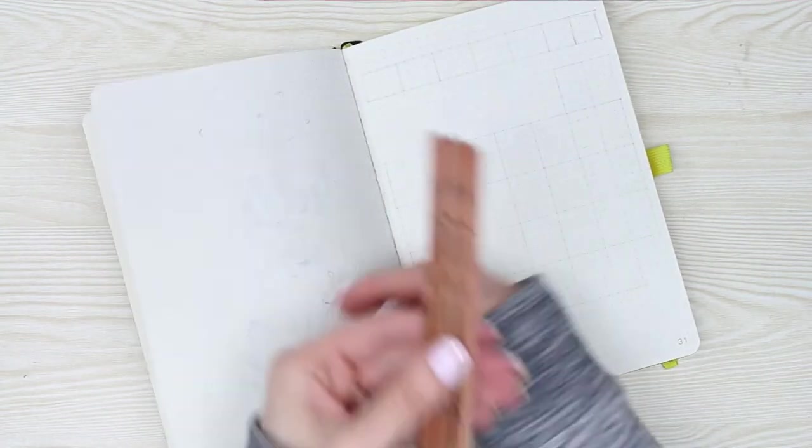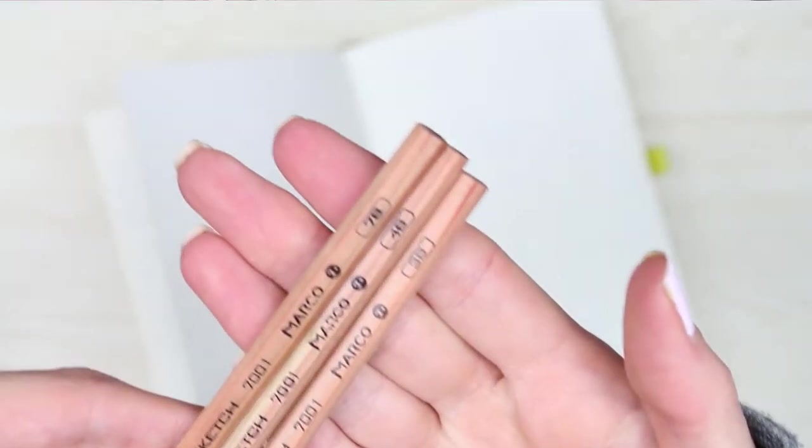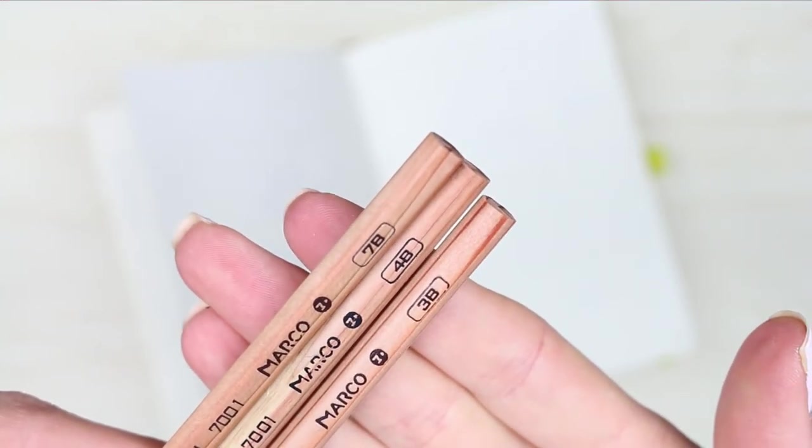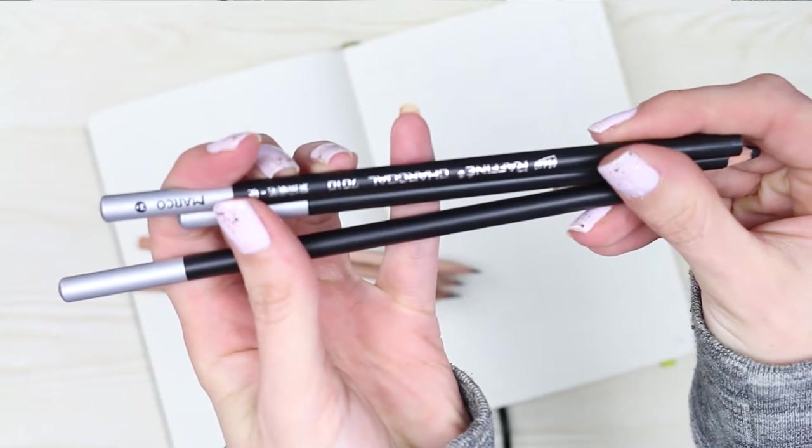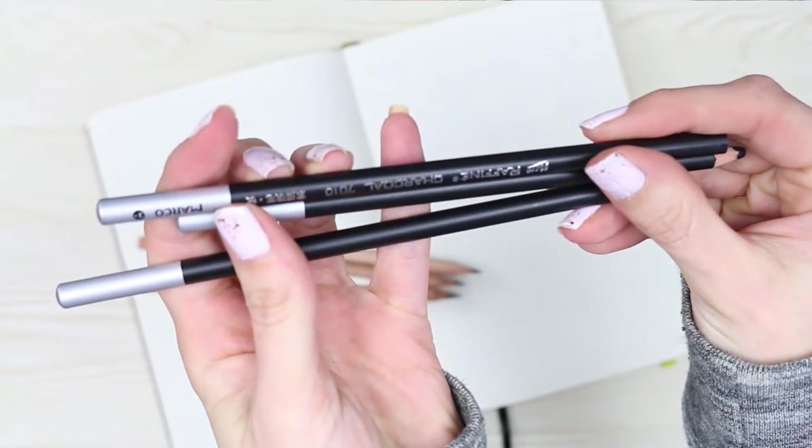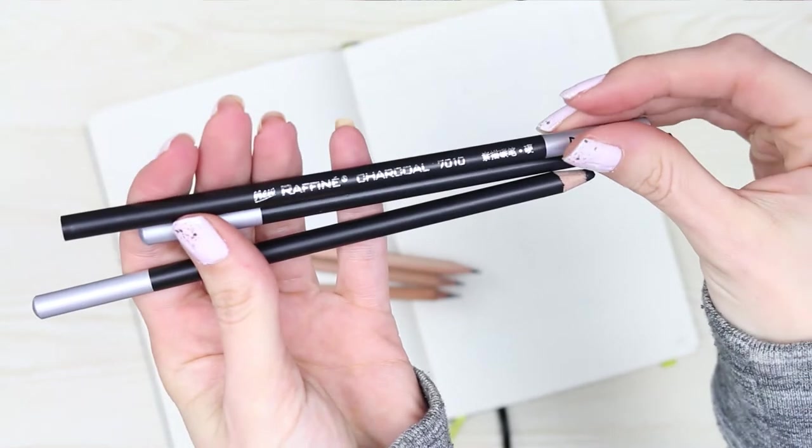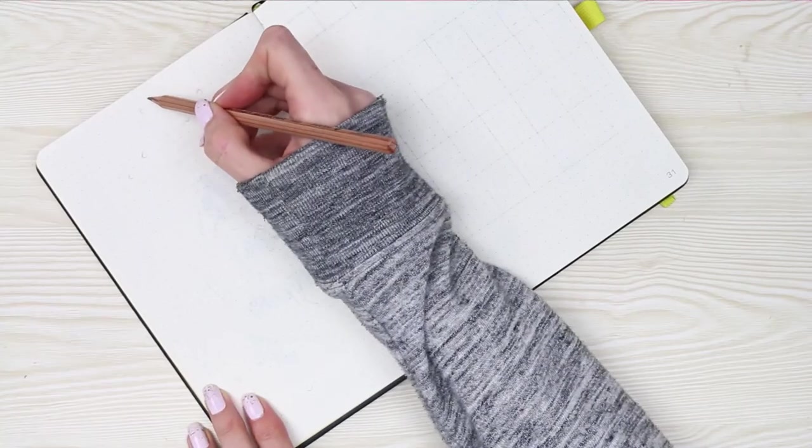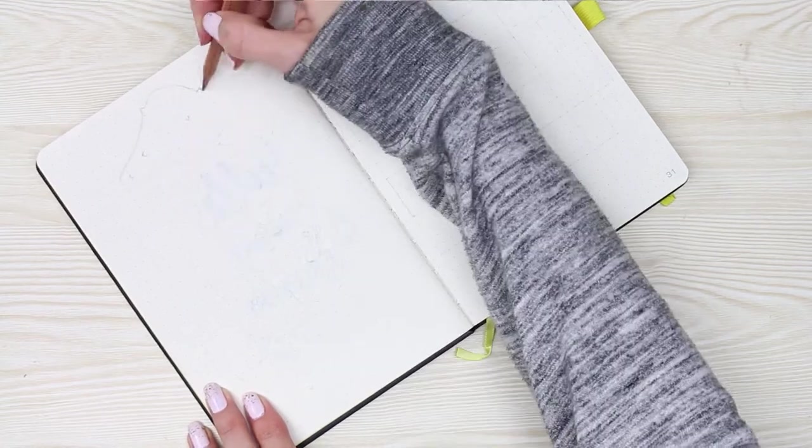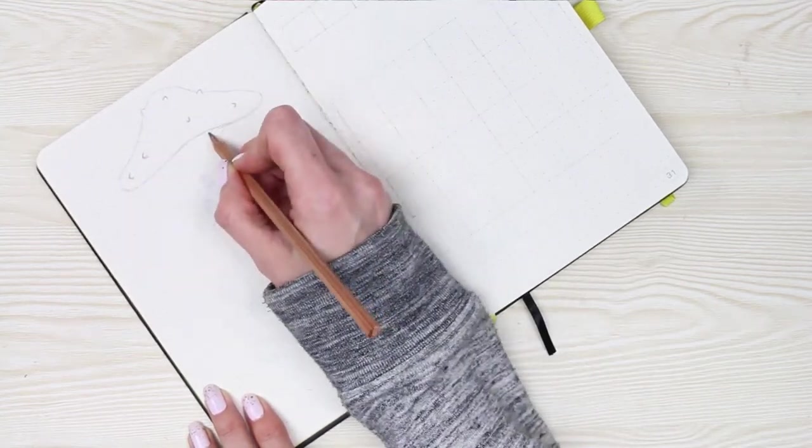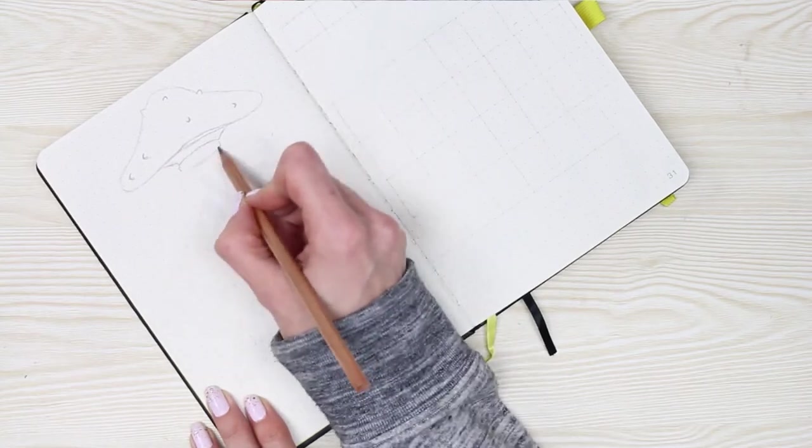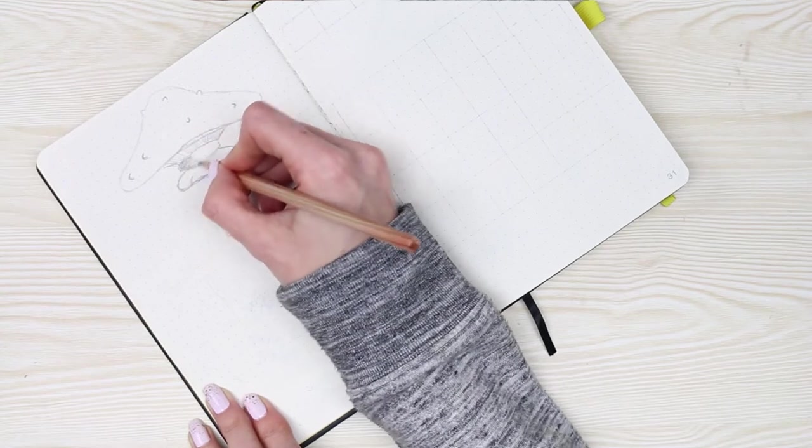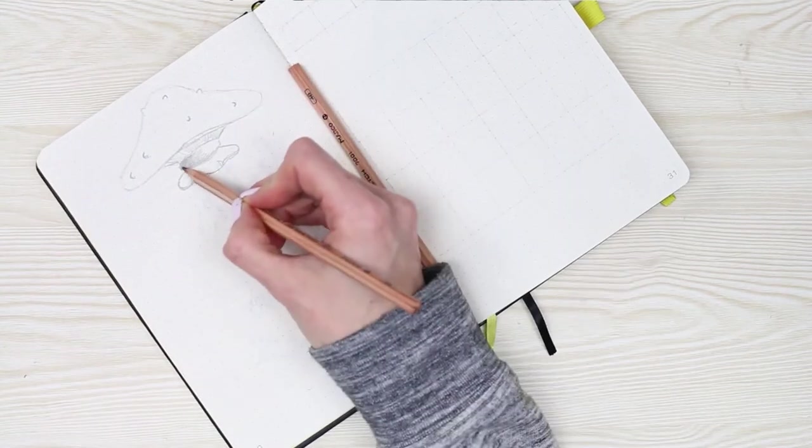For February I've actually decided to sketch in my bullet journal. I've never really sketched in my bullet journal before, just drawn. I'm going to be using a couple of different strengths of pencil. I did pull out some of my charcoal pencils which I use now and again. It's been a while since I've sketched.